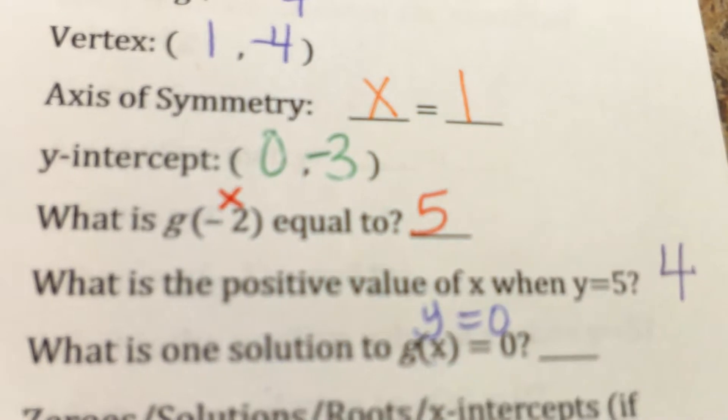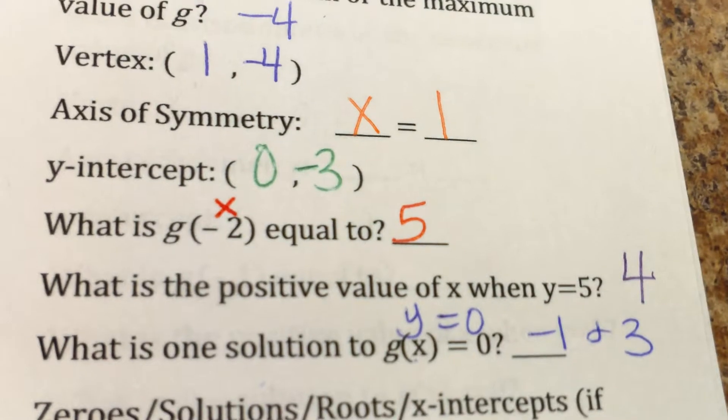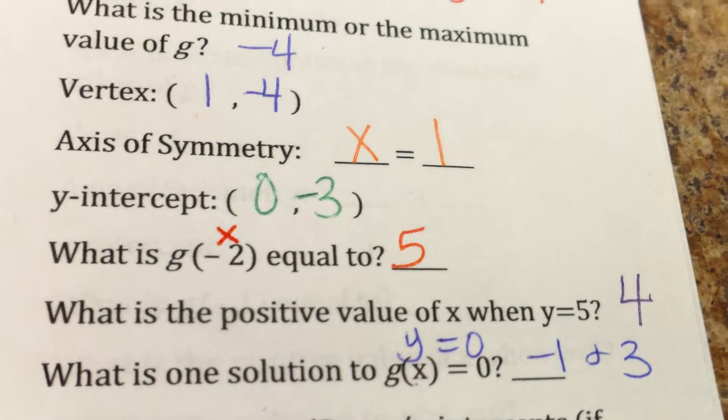And it's asking for one solution. Well, I found two: negative 1 and positive 3, which are, by the way, when it says one solution, remember solution is the same thing as x-intercepts.